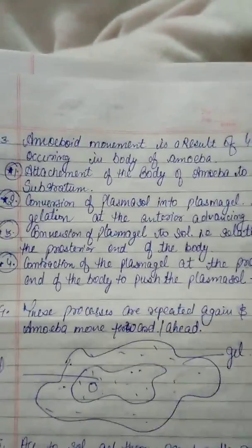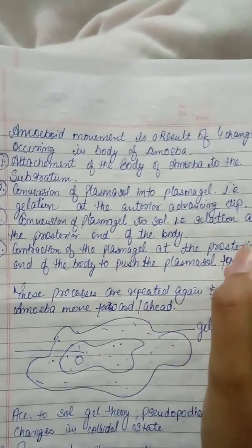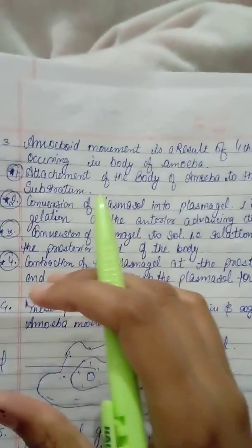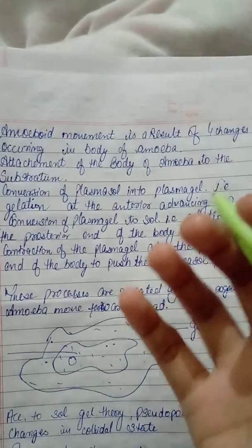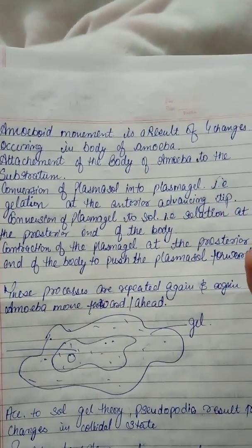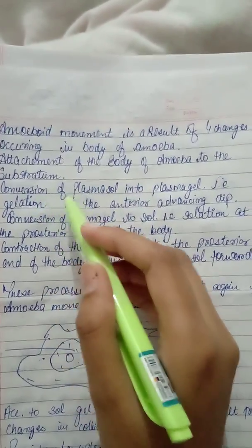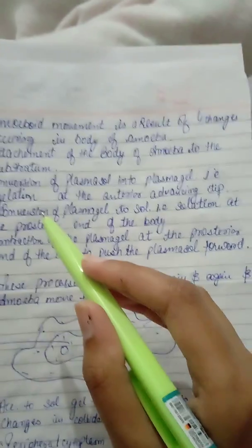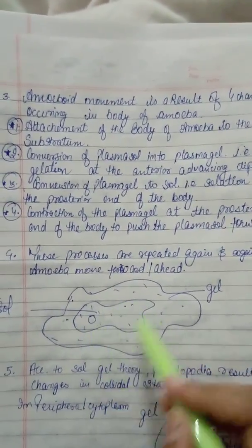Amoeboid movement is the result of four changes. First is the attachment of the body of amoeba to the substrate. Amoeba will attach to a substrate, and chemical signals will come to the receptor part of this amoeba. After that, the conversion of plasma sol happens — the sol will convert to gel, that is, gelation will happen. This gelation happens as sol converts to gel in the ectoplasm part.